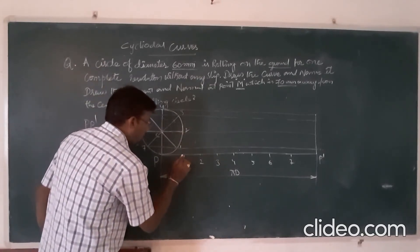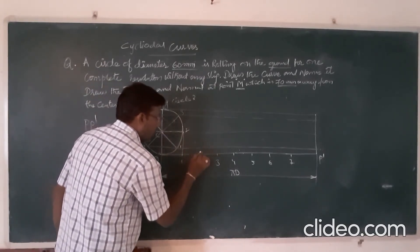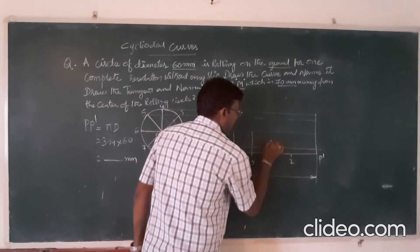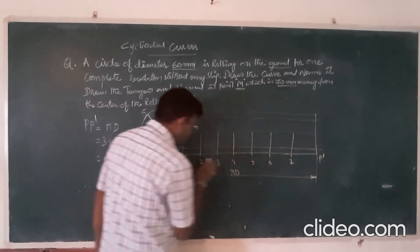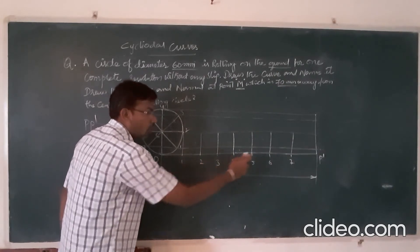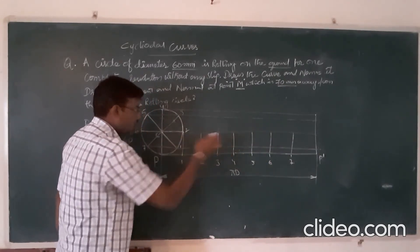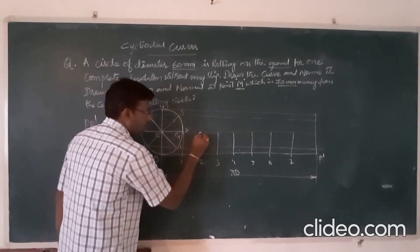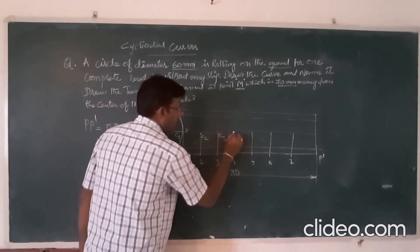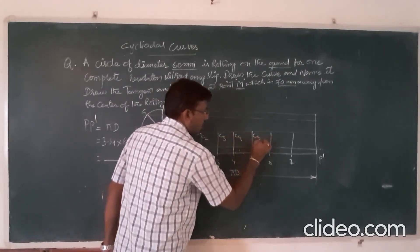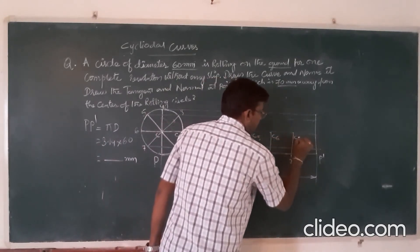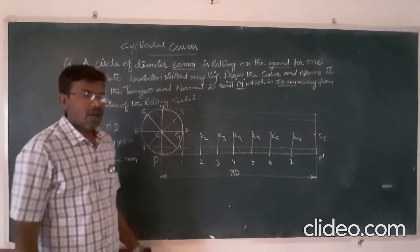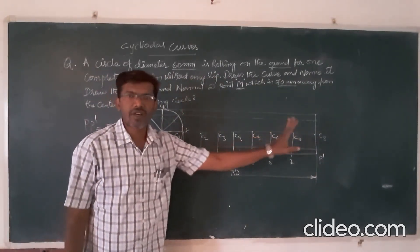Now draw perpendicular lines from the respective points on the ground up to the center line. These perpendicular lines from points 1 through 8 on PP' give the positions of centers C1, C2, C3, C4, C5, C6, C7, and C8 on the center line.